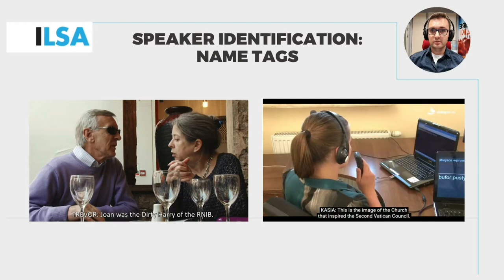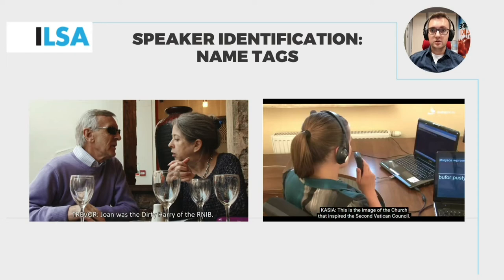Let's have a look at some examples of name tags. They only need to be used when it's not clear from the image who is speaking. For instance, on the left, the speaker is identified as Trevor, as in this shot where it's not clear which of the two characters is speaking. On the right, the tag identifies Kasia, the woman in the shot, as the speaker. The viewers don't see her mouth moving, so thanks to the name tag, it's clear that there's not somebody else in the room who is speaking.